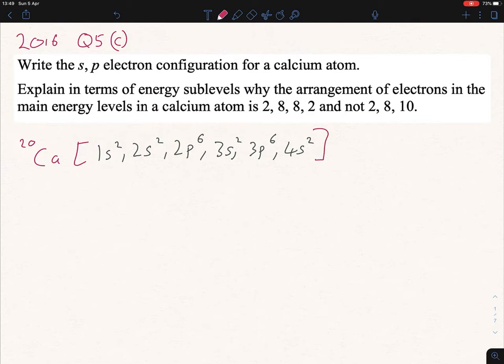Double check to be sure. 2 plus 2 is 4, plus 6 is 10. 10 plus 2 is 12, plus 6 is 18, plus another 2 is 20, giving us our 20 electrons.